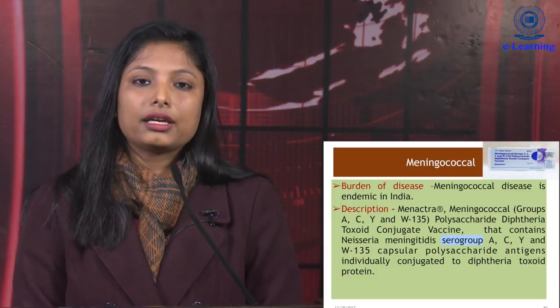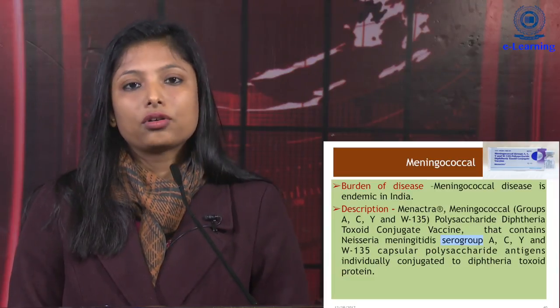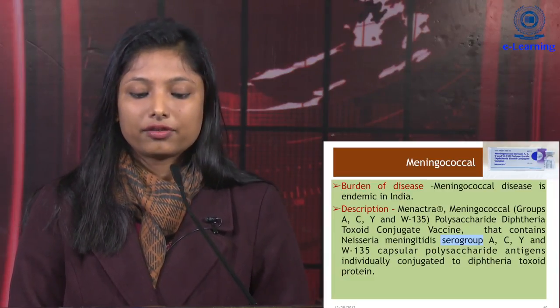A very expensive vaccine is the meningococcal vaccine, with the name Menactra. It is indicated against meningococcal disease which is endemic in India. The vaccine strains include groups A, C, Y and W135. It is approved for the age group of 9 months to 55 years of age. It is stored at 2 to 8 degrees centigrade, administered at a dose of 0.5 ml intramuscular. There are no major contraindications or side effects for this vaccine.